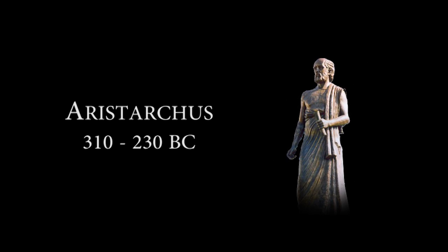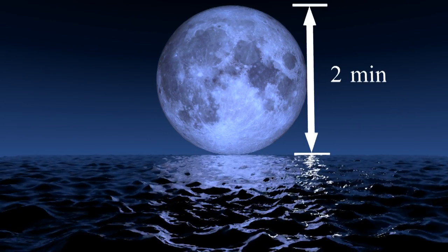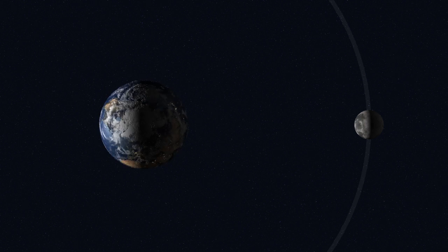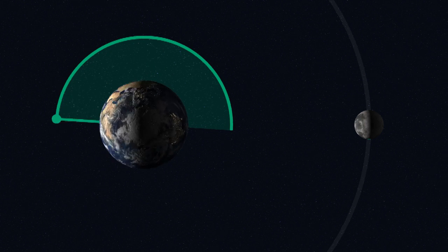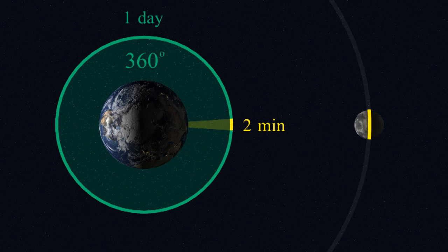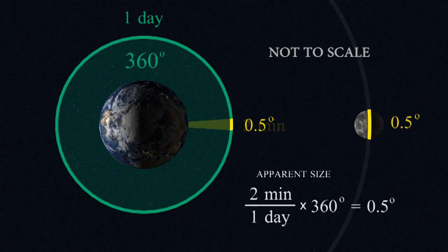Aristarchus estimated the size of the moon using eclipses. The moon takes about two minutes to rise above the horizon. This motion is caused by the Earth's rotation, which takes a day to turn 360 degrees and two minutes to rotate the length of the moon. That means the moon takes up half a degree of the sky.